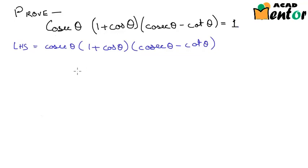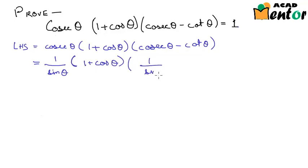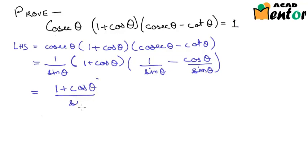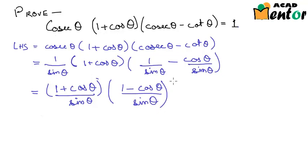So here cosec θ becomes 1/sin θ, giving us (1/sin θ) × (1 + cos θ) × (1/sin θ - cos θ/sin θ). This further equals (1 + cos θ)/sin θ multiplied by (1 - cos θ)/sin θ, after taking the LCM in the second bracket since both terms had sin θ in the denominator.